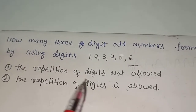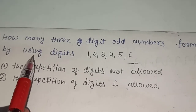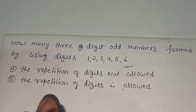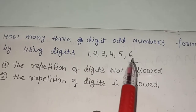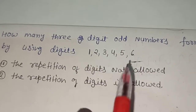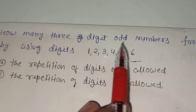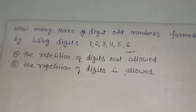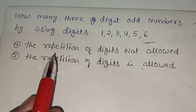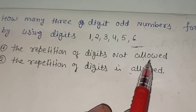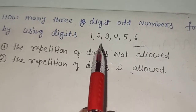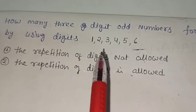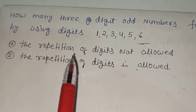In this question, we have to form three-digit numbers. The requirement is odd three-digit numbers, and we will make these using only the digits 1, 2, 3, 4, 5, and 6. The condition is only odd three-digit numbers using all six digits. Condition number one is that repetition of digits is not allowed — each digit can be used only once.